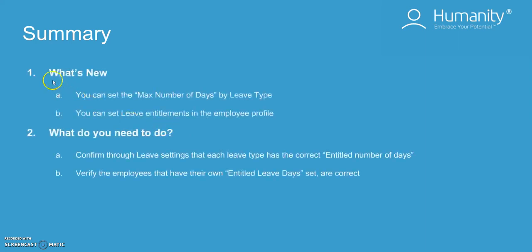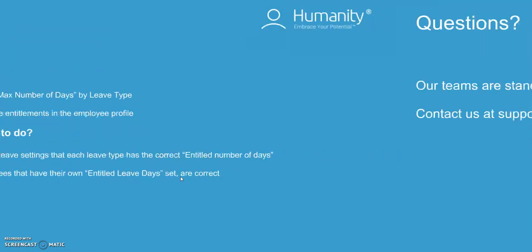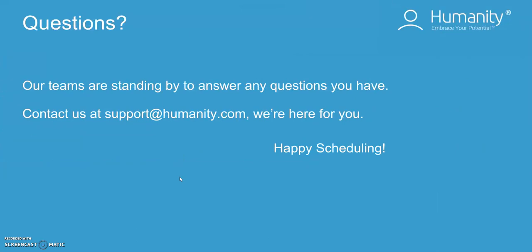Let's do a quick recap. First, you can set the max number of days by leave type. Second, you can set leave entitlements in the employee profile. What you need to do is confirm through leave settings that each leave type has the correct entitled number of days, and also verify that employees who have their own entitled leave days set have them set correctly. I hope this webinar was helpful. Our teams are standing by to answer any questions you have. Please contact us at support@humanity.com. We're here for you.